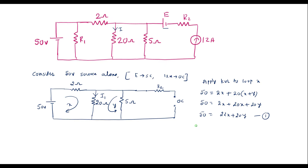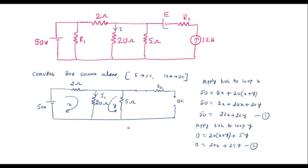Now applying KVL to loop Y. There are no voltage sources, so: 0 = 20(X + Y) + 5Y. Simplifying: 0 = 20X + 25Y. This is equation 2. Now solving equations 1 and 2, we can find X and Y.